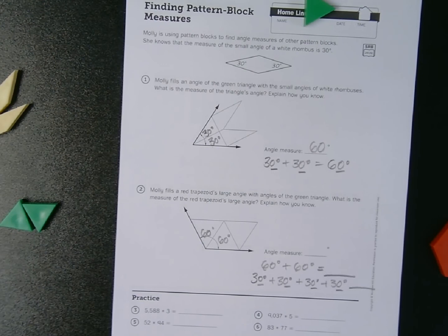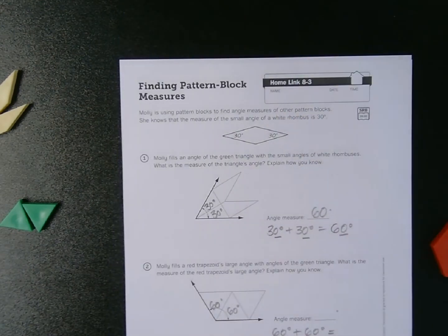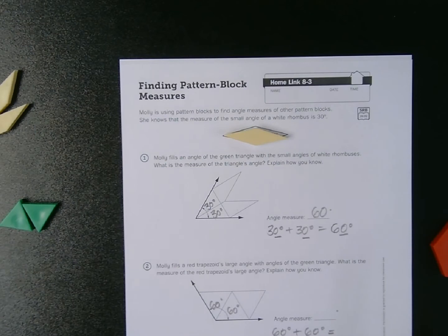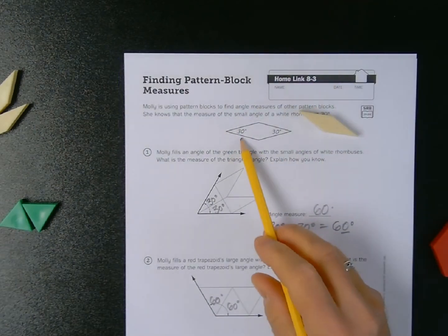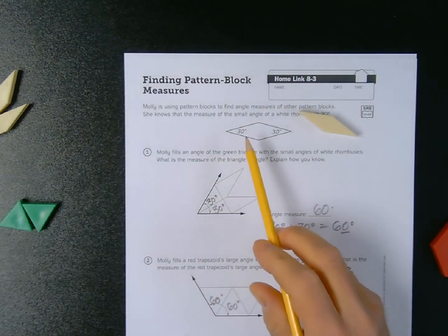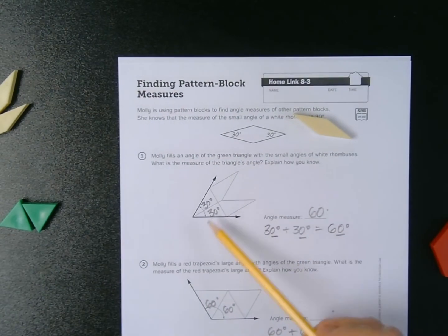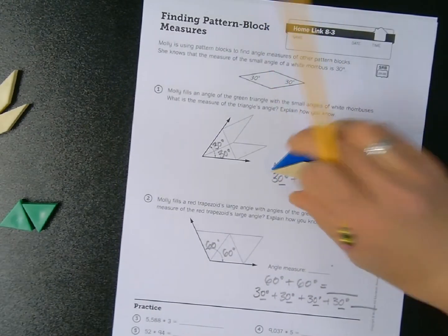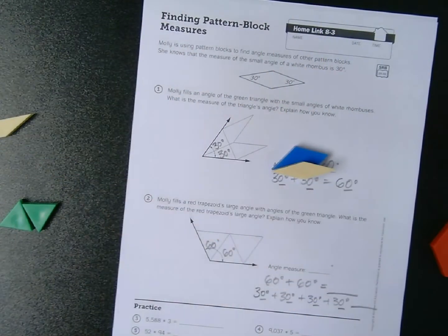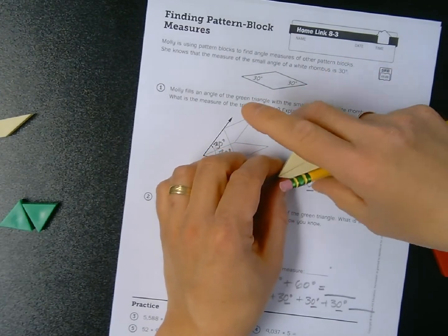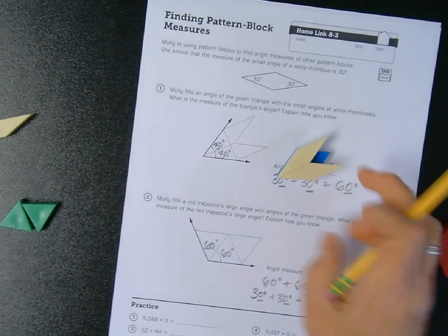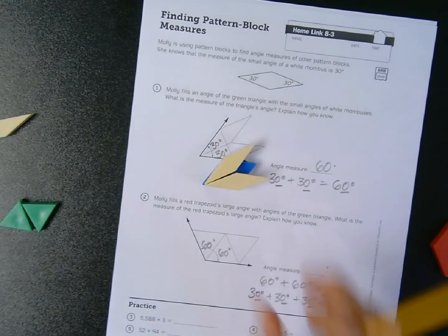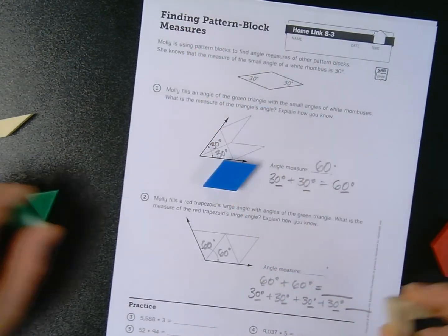As long as I have a key to work off of and I know at least one angle, I'm allowed to then figure out other angle measurements by relating one pattern block to another. I can take this blue rhombus and compare my white rhombus to it, and I can see that they occupy the same space.